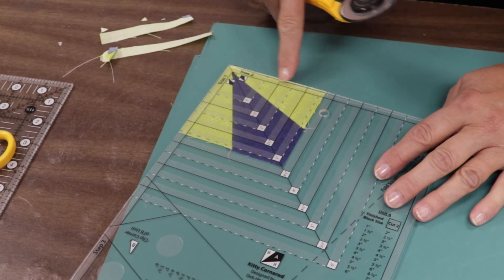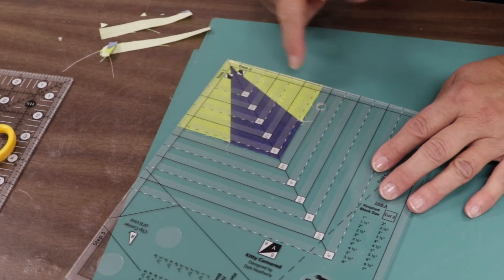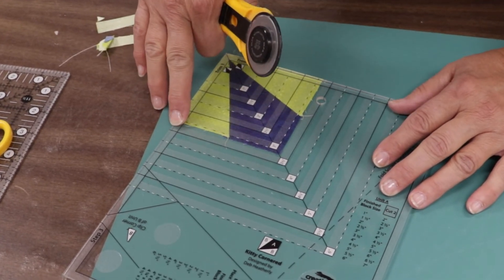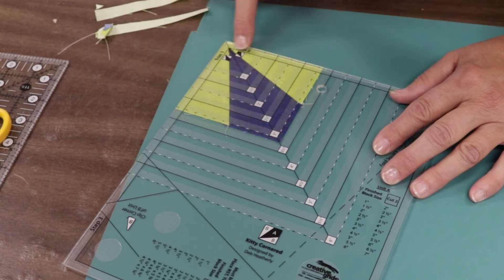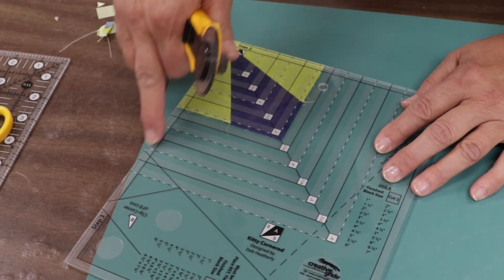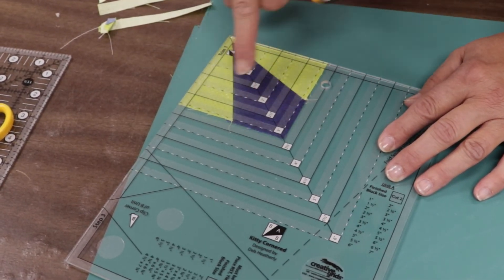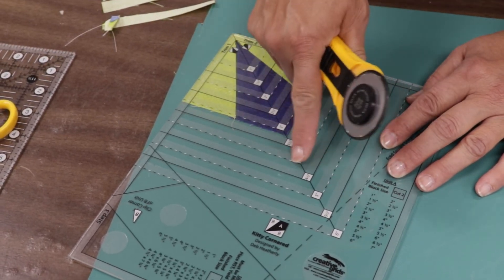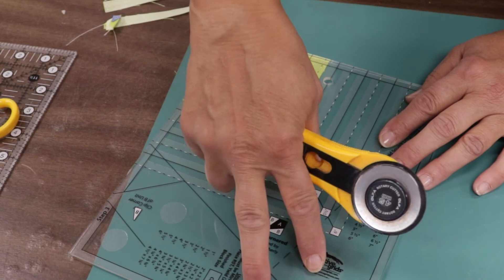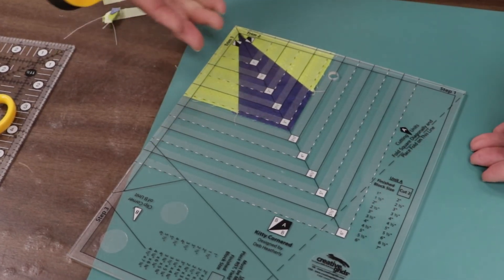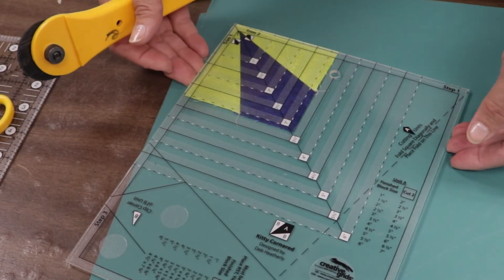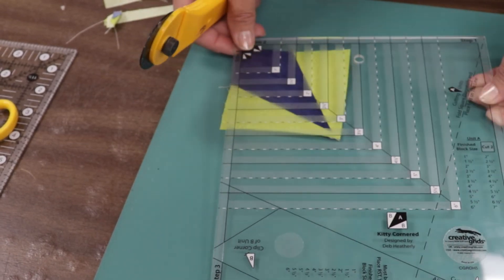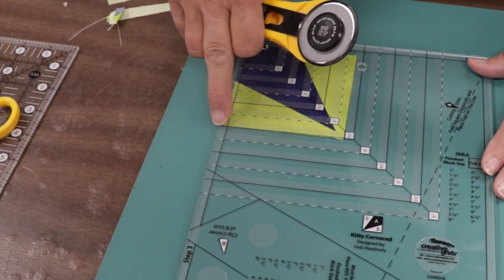So once we've trimmed, remember this includes all our seam allowances. And the great thing about the Creative Grid Ruler is that it does have those grippers going around the outsides of our rulers. And then every time we need to cut one of our squares, it also has the grippers.